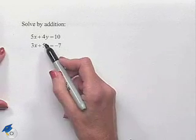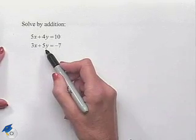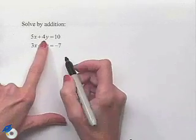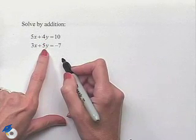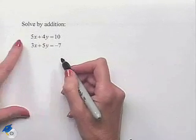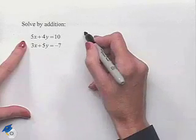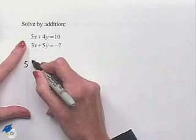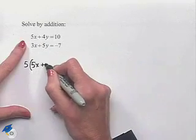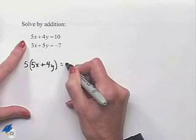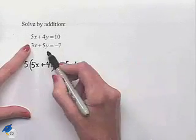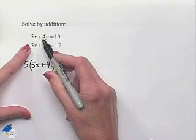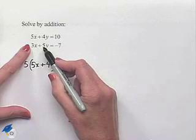I'm going to go ahead and try to eliminate our y values. I notice that we have a coefficient of 4 in our first equation, a coefficient of 5 in our second. If I multiply my first equation by 5, that would look like 5(5x + 4y) = 5(10). And if we multiply our second equation by -4, we'll end up having the common multiple of 20 with opposite signs.